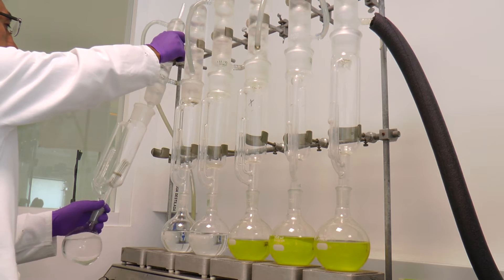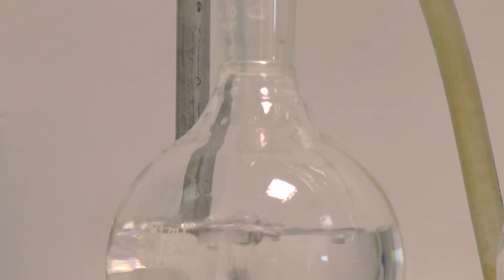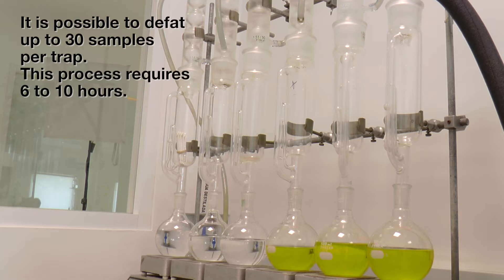Each cone is placed in the trap of the Soxhlet equipment, which defats the flour using 300 ml of hexane.